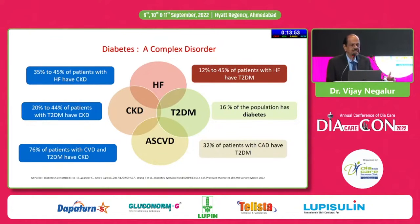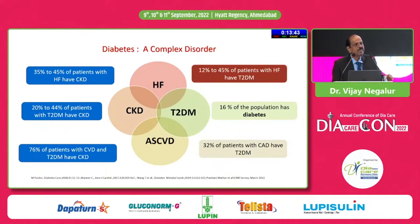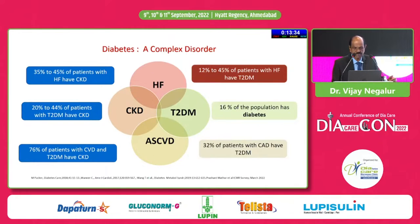Diabetes is a very complex disease, as seen in this Venn diagram showing heart failure, chronic kidney disease, type 2 diabetes, and excess chronic cardiovascular disease are all intertwined. Twelve to 45 percent of patients with heart failure have diabetes, 16 percent of diabetic patients develop heart failure, and 35 to 45 percent of heart failure patients have chronic kidney disease.